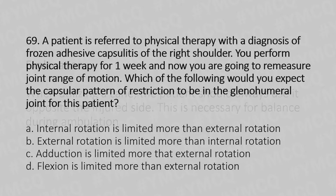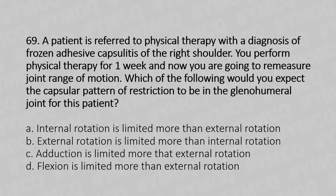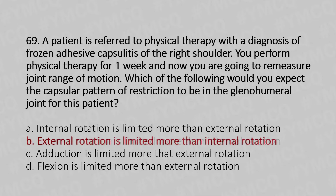Now move to our 69th question. A patient is referred to physical therapy with a diagnosis of frozen adhesive capsulitis of the right shoulder. You perform physical therapy for one week and now you are going to remeasure joint range of motion. Which of the following would you expect the capsular pattern restriction to be in the glenohumeral joint? Option A: internal rotation is limited more than external rotation. Option B: external rotation is limited more than internal rotation. Option C: adduction is limited more than external rotation. Option D: flexion is limited more than external rotation. And the answer is Option B: external rotation is limited more than internal rotation.